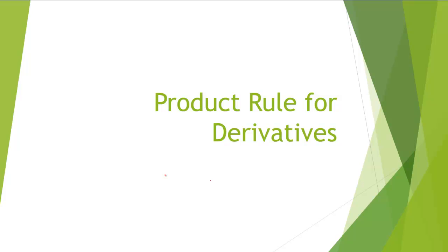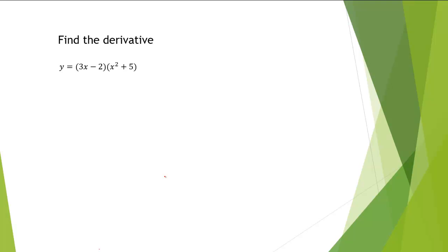In this session, we'll take a look at the product rule for derivatives. In this example, we're asked to find a derivative for the function 3x minus 2 times the quantity x squared plus 5.